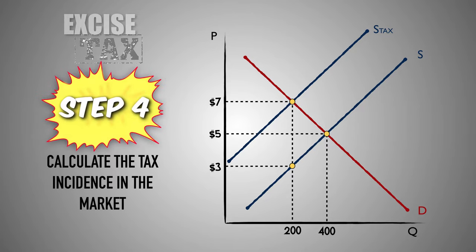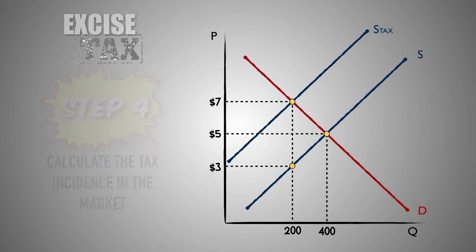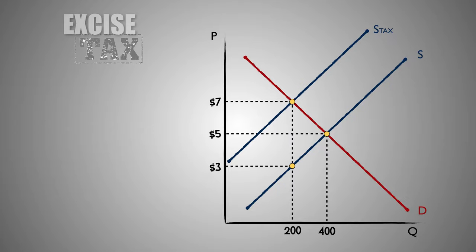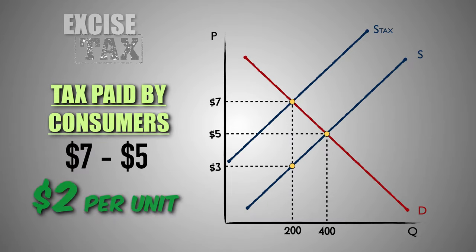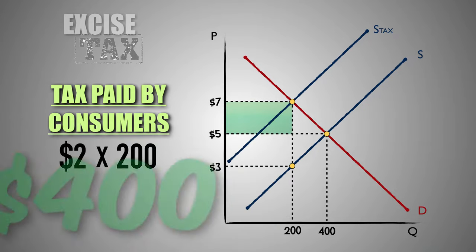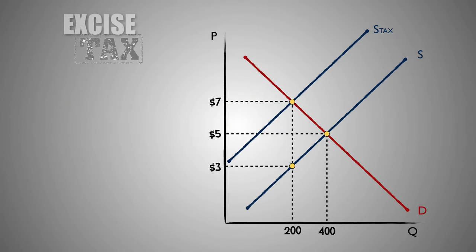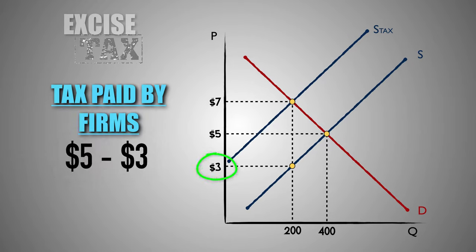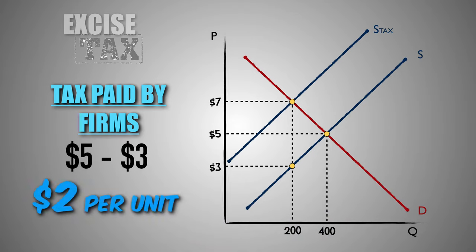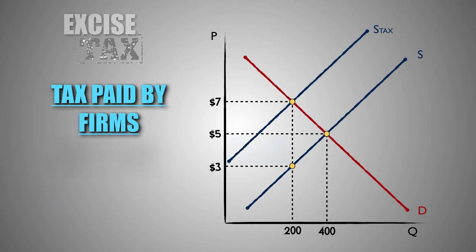Step 4: We can now determine tax incidence — exactly how firms in the industry share the tax burden with consumers. Before the tax, the equilibrium price in the market for Good C was $5. However, after the $4 per unit excise tax was imposed, the price of Good C rose to $7. Because the price paid by buyers increased by $2, we can conclude that firms split the burden of the tax evenly with consumers — consumers pay $2 of the $4 tax through higher product price, and firms pay the remaining $2 themselves. This means the portion of total tax revenue paid by consumers is $400, and the portion paid directly by producers is also $400, as firms only keep the seller's price of $3 per unit after paying the $4 per unit in taxes.